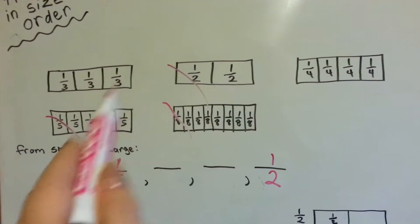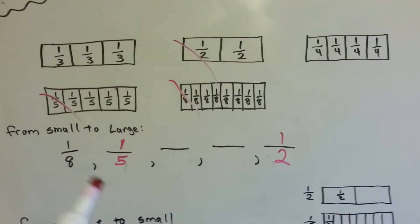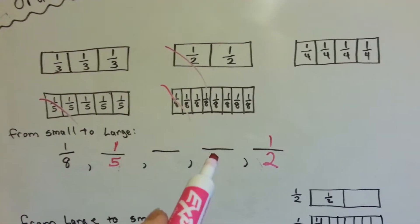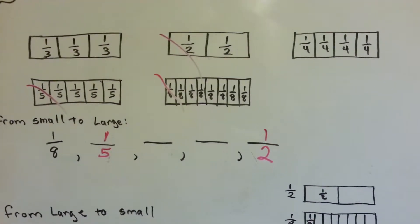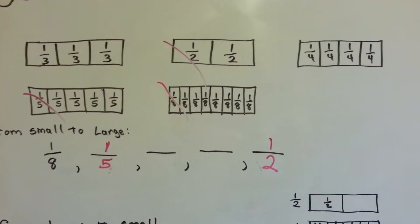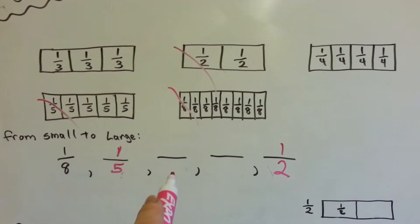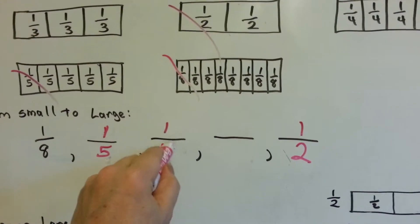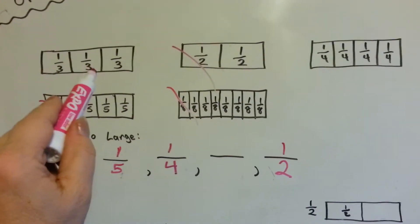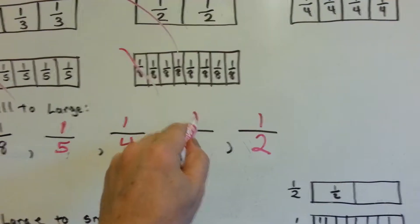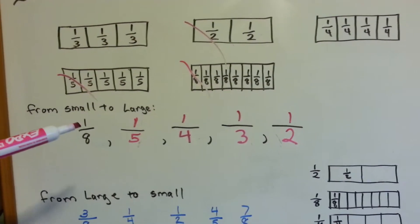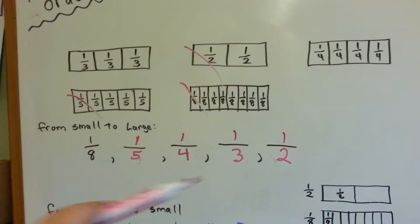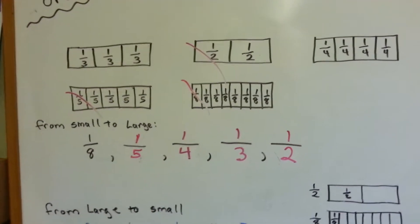These are the only two left, and we need to put them in order from small to large. The one that goes next is going to be the fourths, so that means the only one left is the third. As the fractions got larger, the portions got larger, and the denominator got smaller.